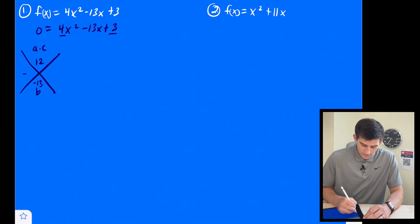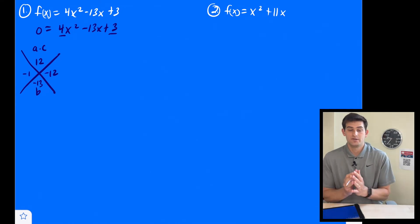Okay, so that's going to be negative one and negative 12, right? Multiply those together, we get positive 12. Add them, we get negative 13.